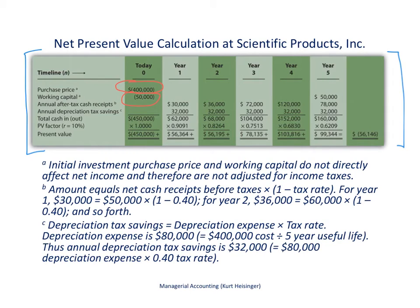Next, looking at the annual after-tax cash receipts. Footnote B shows that in year one we expect cash receipts of $50,000. We adjust to after-tax cash receipts using a 40% income tax rate: $50,000 times 1 minus 0.4 equals $50,000 times 0.6, giving us $30,000 in expected after-tax cash receipts for year one. We would apply this same calculation for subsequent years — multiplying expected cash receipts by 1 minus the tax rate to get after-tax cash receipts.